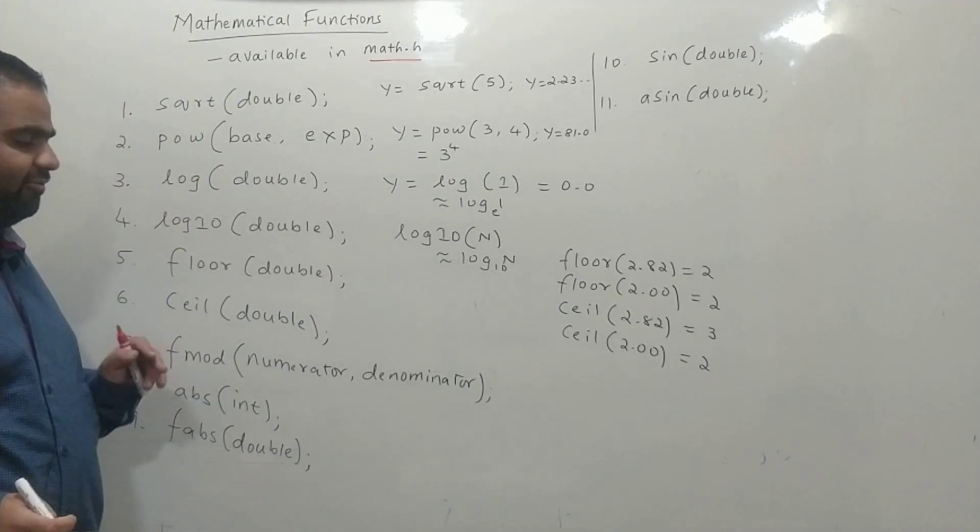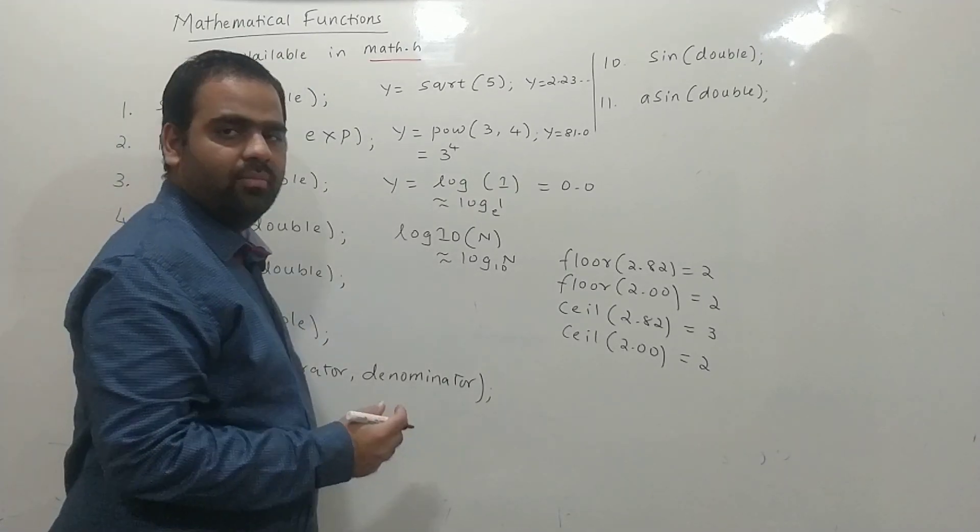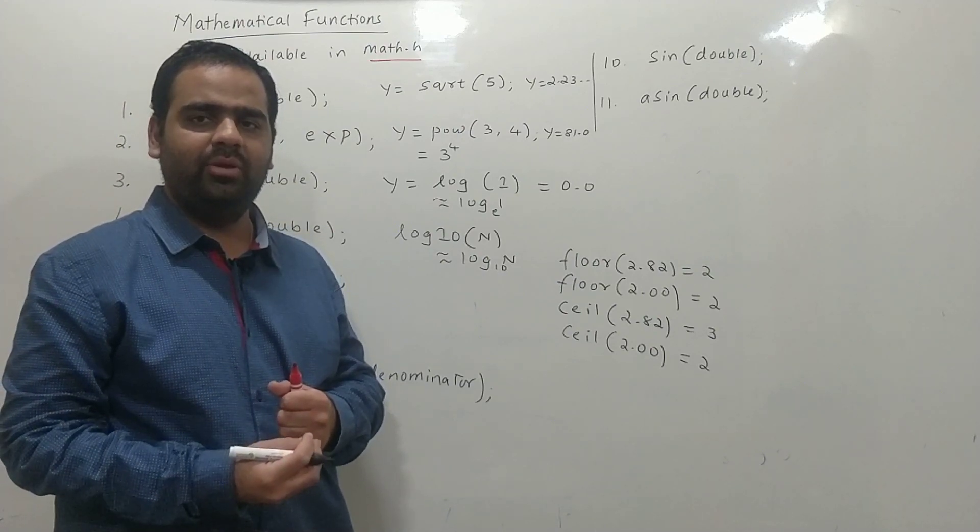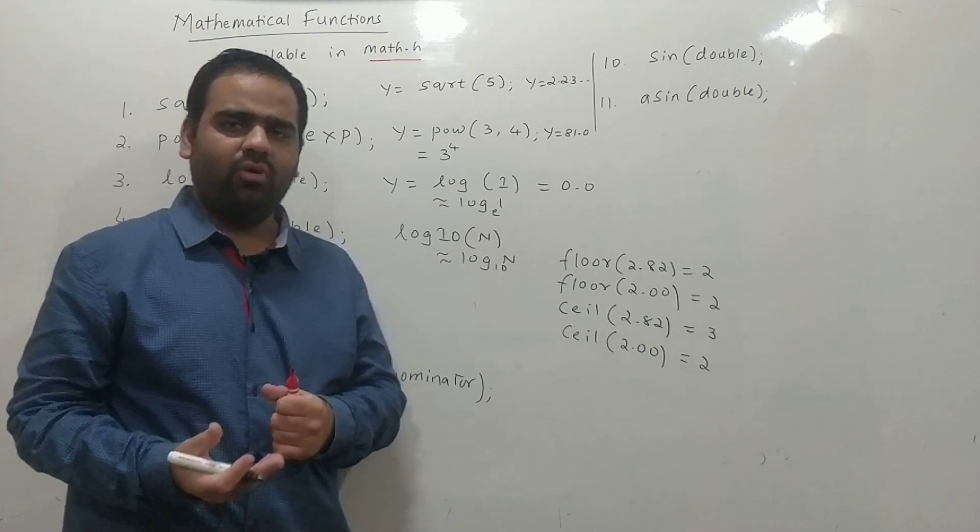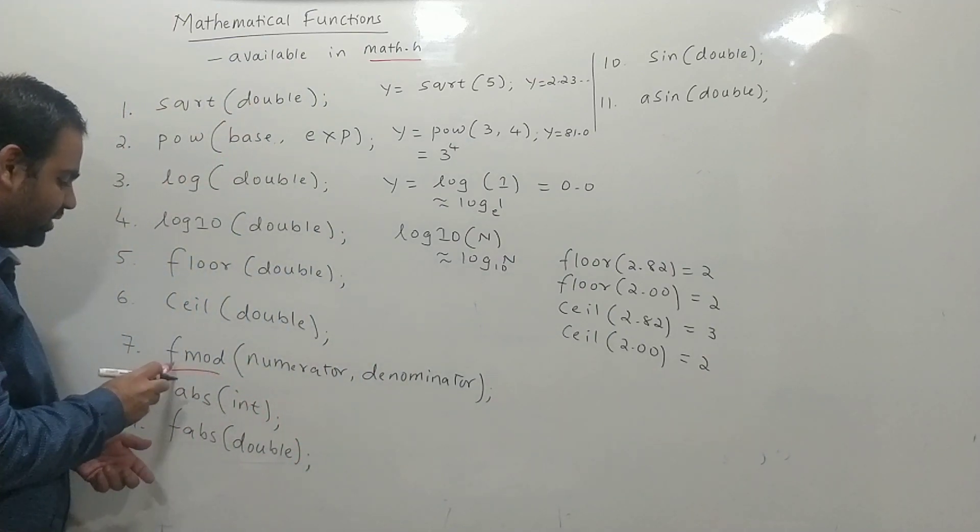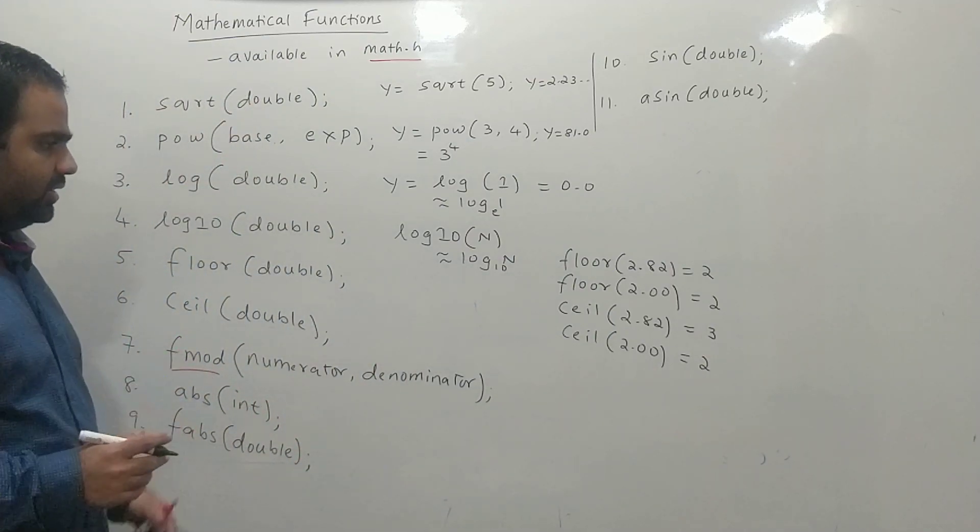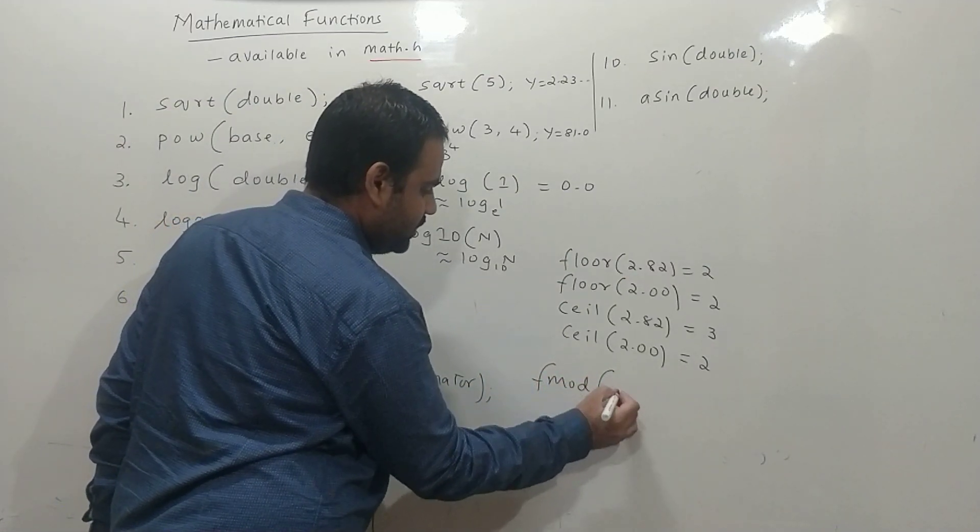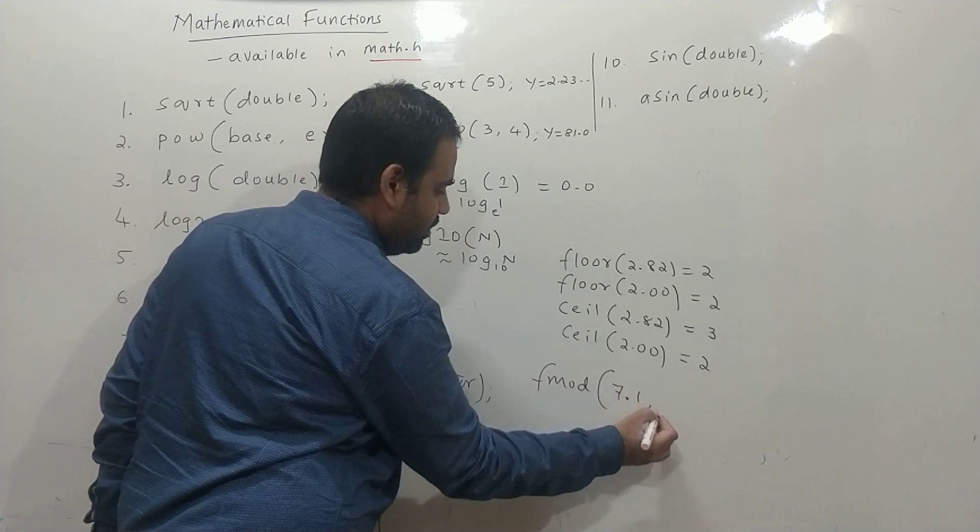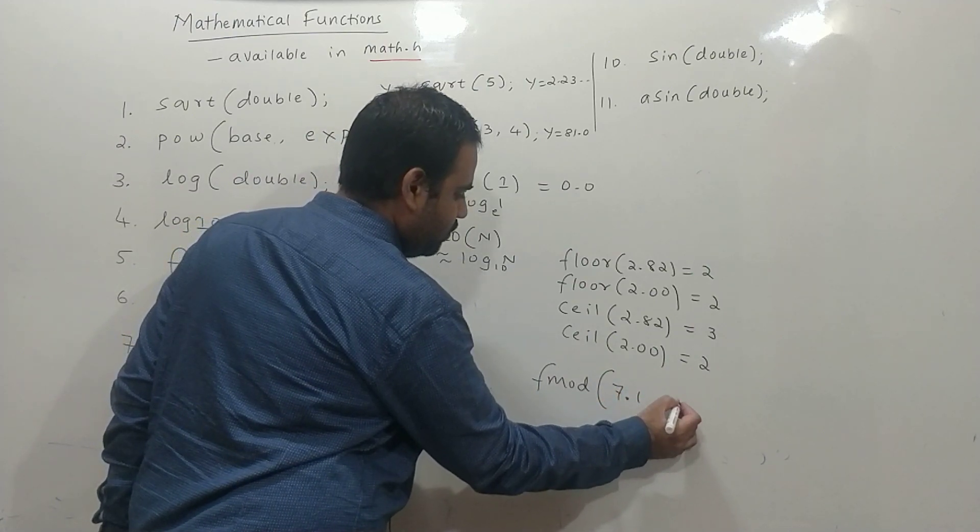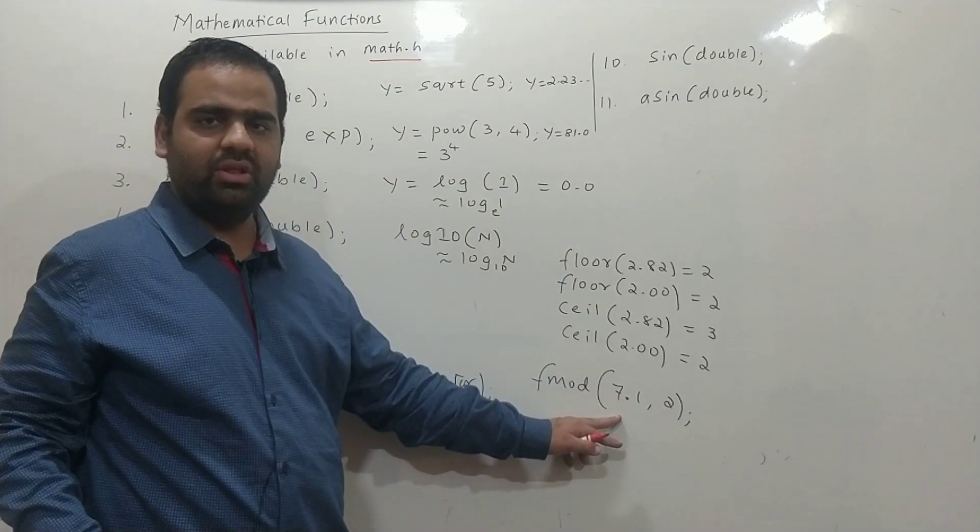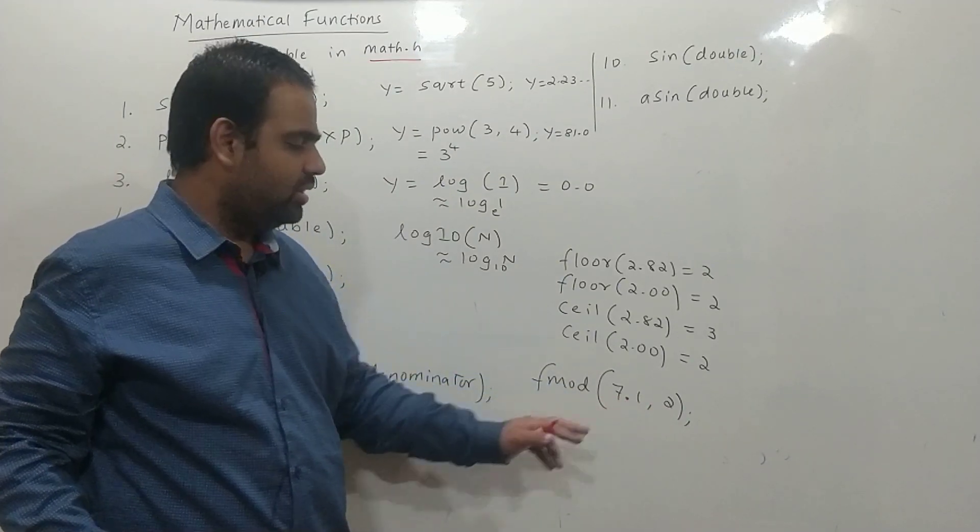The next thing is fmod. We know that modulo operator can only be used on integers, not on real numbers. If we want to use it on real numbers, we use a function called fmod. How does it work? If we write fmod of 7.1, 2.00, we know that 2 threes are 6. The remainder would be 1.1. Therefore, this answer would be 1.1.